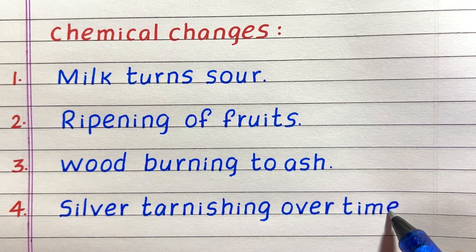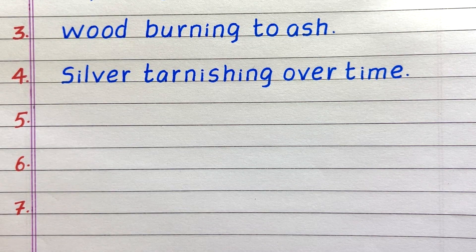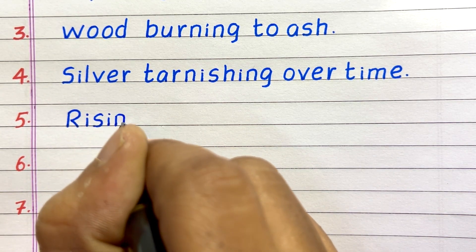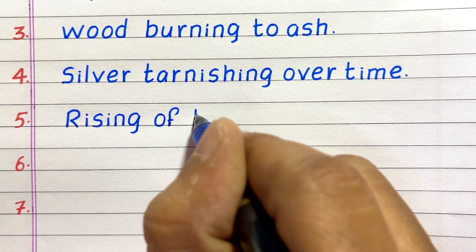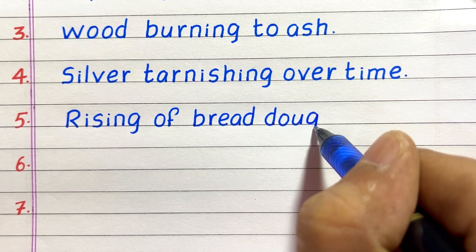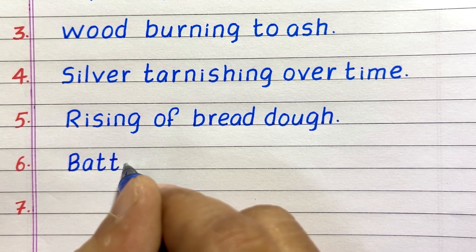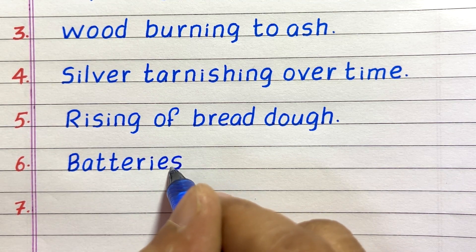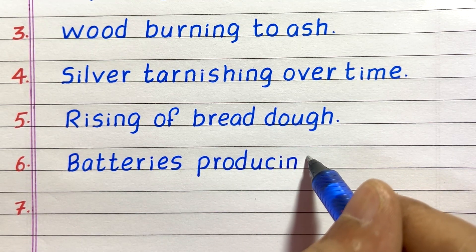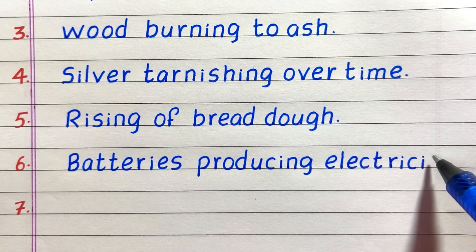Fourth, silver tarnishing over time. Fifth example of a chemical change is rising of bread dough. Sixth, battery producing electricity.